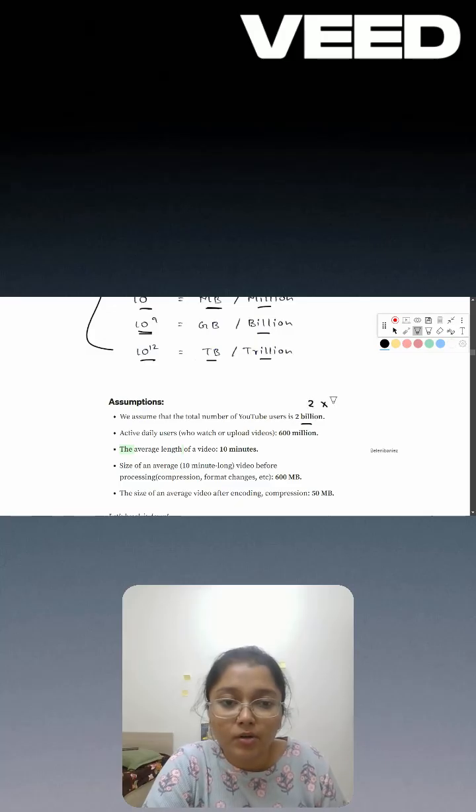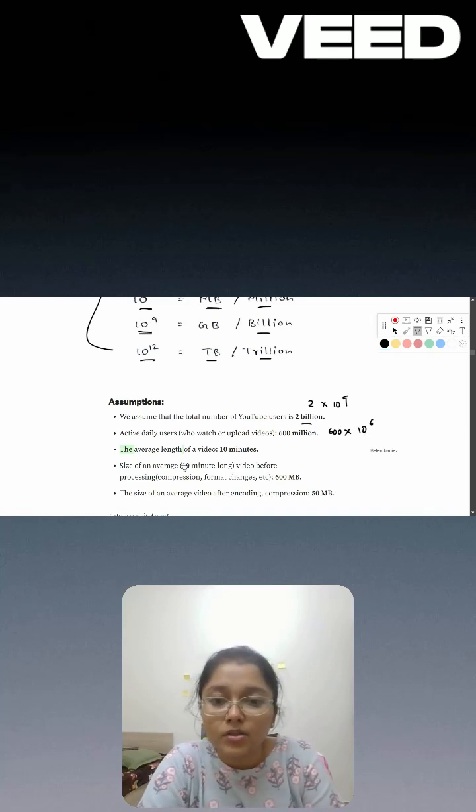So what we will do: 2 into 10 to the power 9. In case of 600 million, we'll use 10 to the power 6, so we will represent it as 600. This is how it is easier for us to do the calculation.